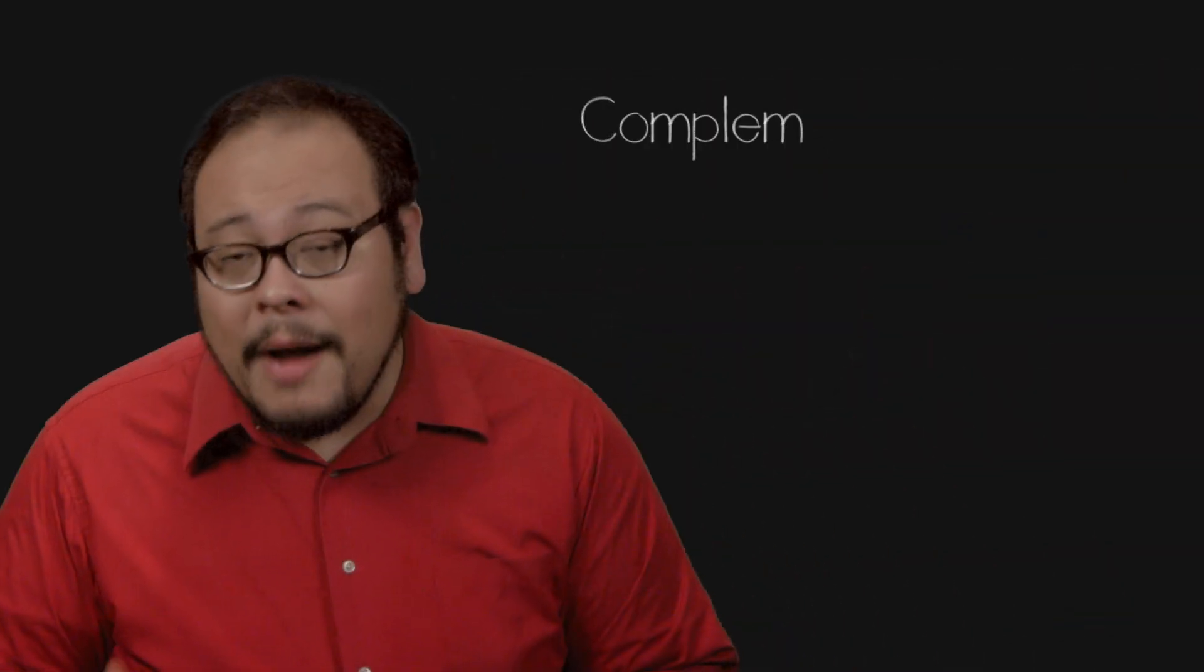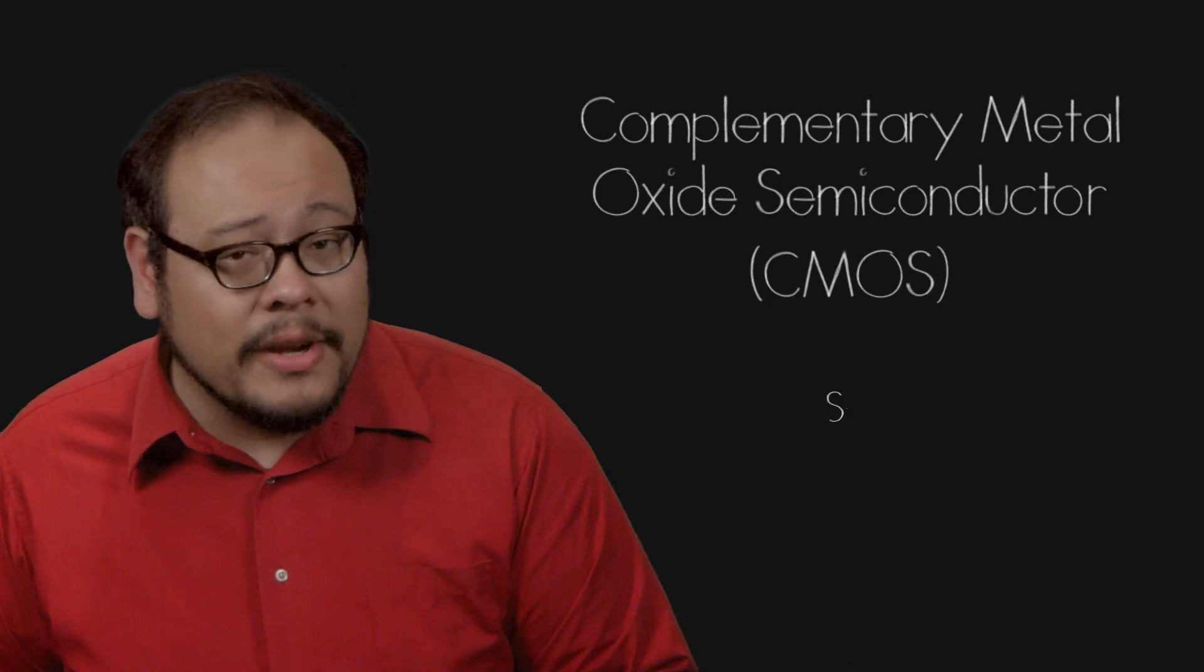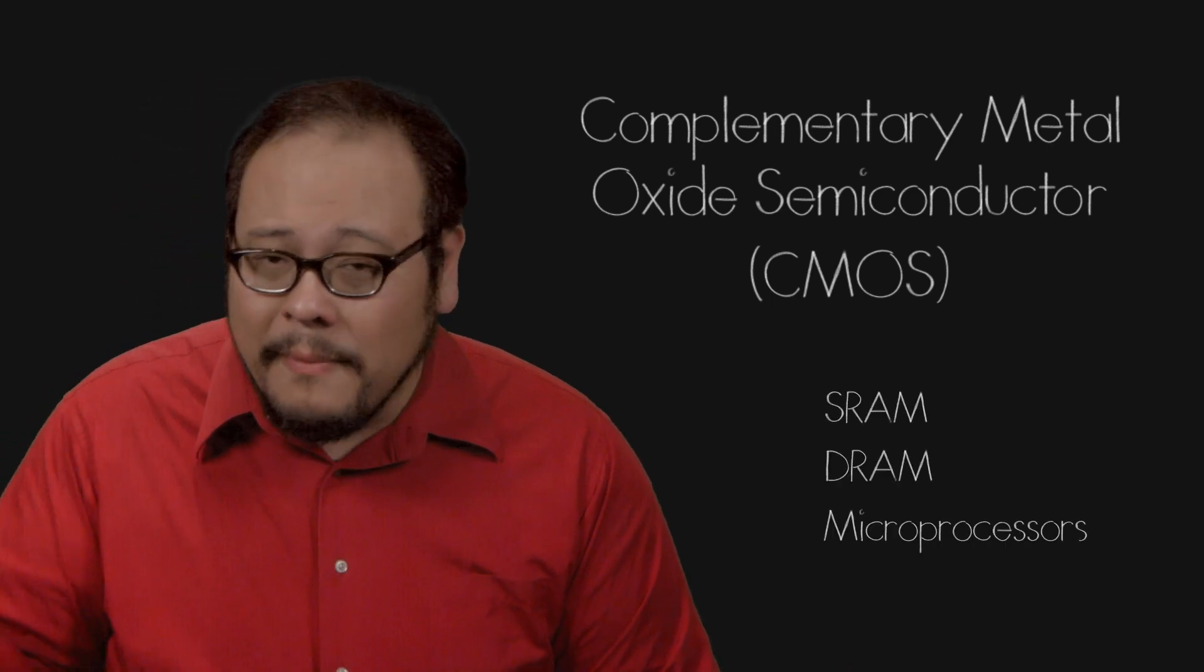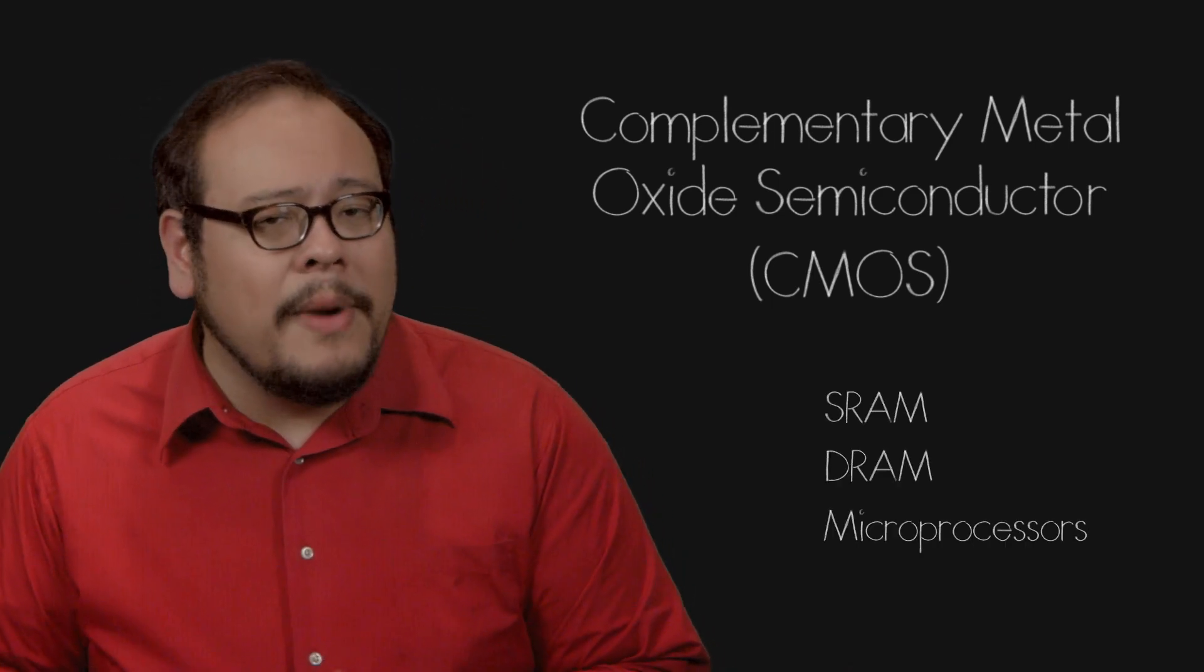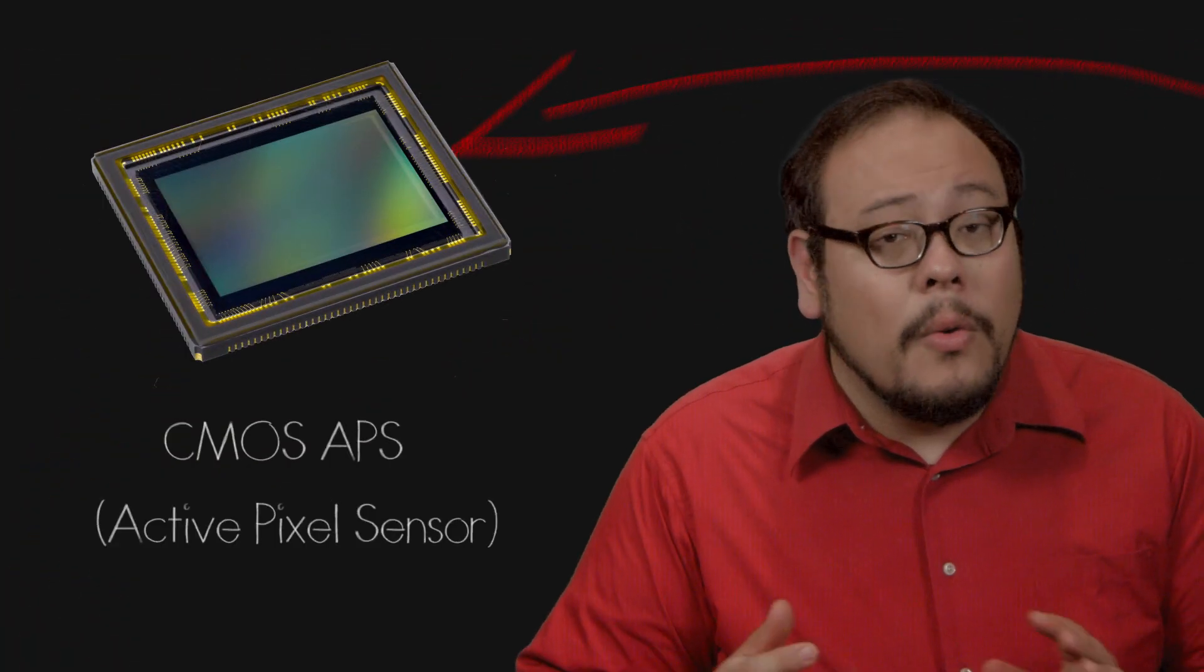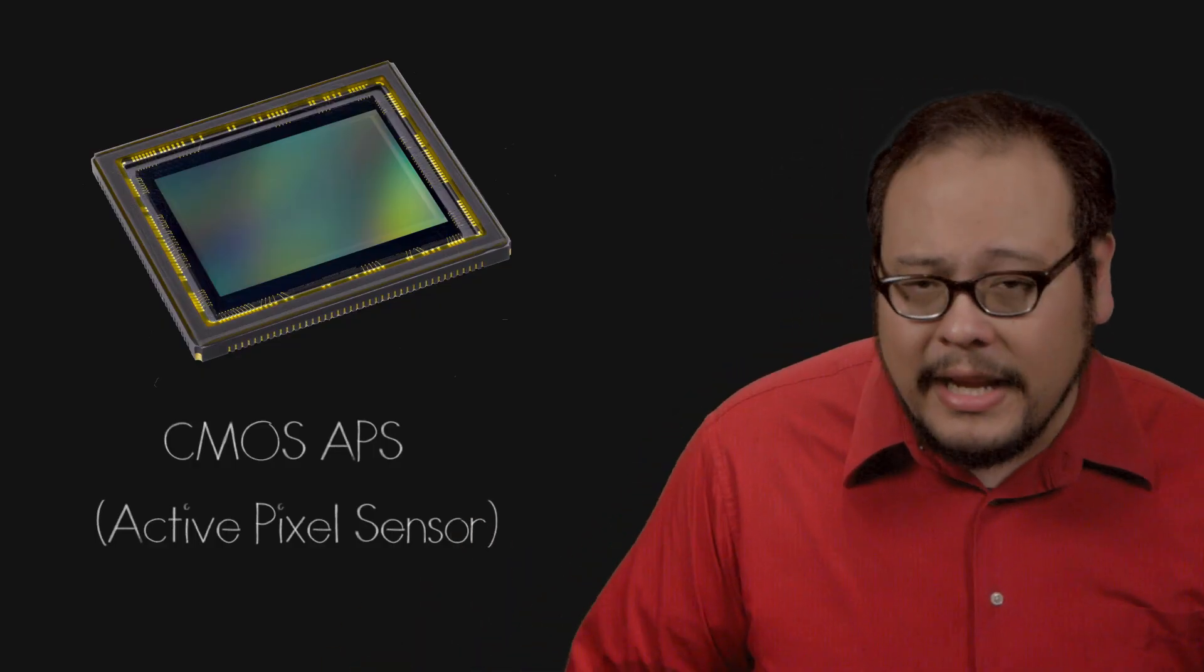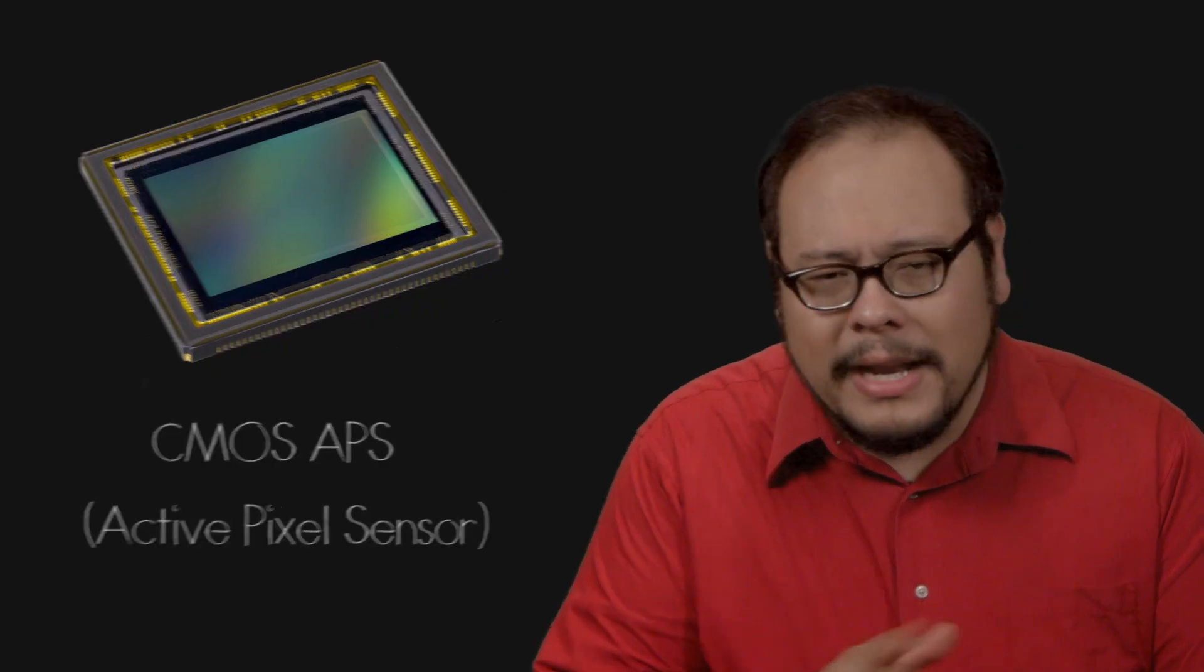CMOS or Complementary Metal Oxide Semiconductor is a technique of constructing integrated circuits such as SRAM, DRAM and microprocessors. The CMOS sensor or more accurately the CMOS APS for active pixel sensor were described in papers at relatively the same time as the invention of the CCD. But CMOS sensors lagged behind because of manufacturing reasons. But as manufacturing processes became more sophisticated, the CMOS APS became commercially viable as a camera sensor in the mid 1990s.